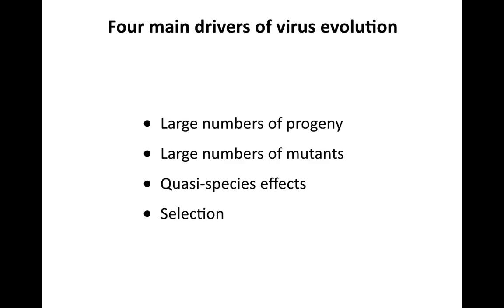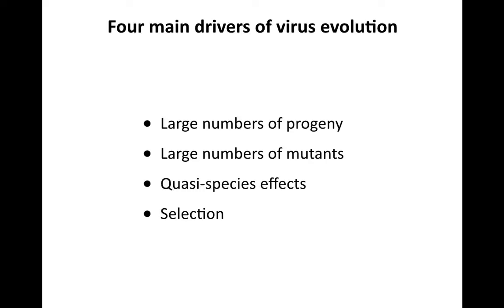Let's talk about the four main drivers of virus evolution: large numbers of progeny, which we've touched on many times; large numbers of mutants or a high mutation rate; quasi-species effects — that's a new term we'll define and discuss; and finally, selection. These are the four main drivers of virus evolution, and there's no question that you need to understand these and how they work.